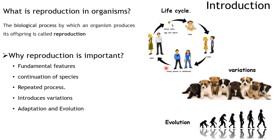Variation and evolution are mostly seen in sexually reproducing organisms, not in asexually reproducing ones. When you compare asexual reproduction with sexual reproduction, you find more variation in sexual reproduction. I'll explain why that variation happens in sexual reproduction in further slides. Now let's start with the proper introduction for today's chapter: sexual reproduction.